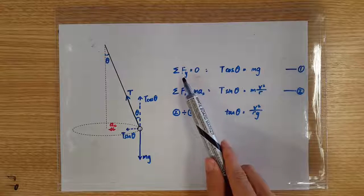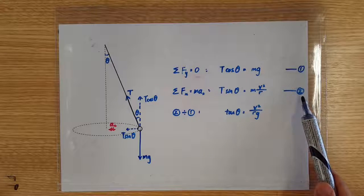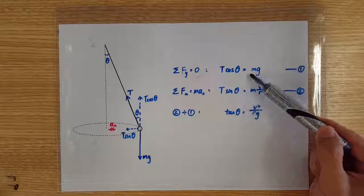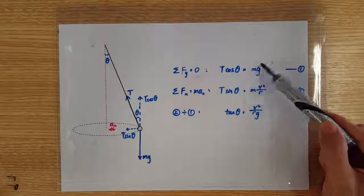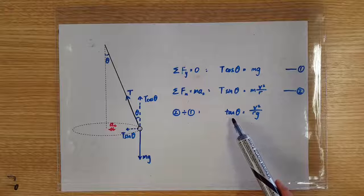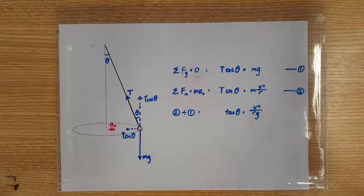So one equation for the vertical net force and the second equation for the horizontal net force. Divide this equation by this one, and the T's and the M's will cancel out, and all we are left with is tan θ equals v squared over rg.